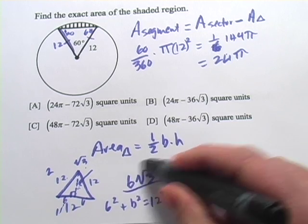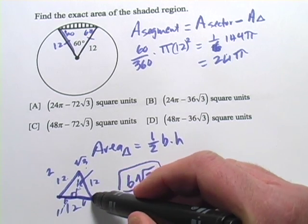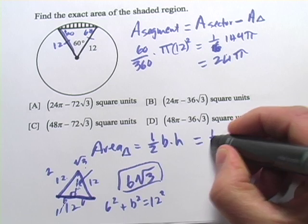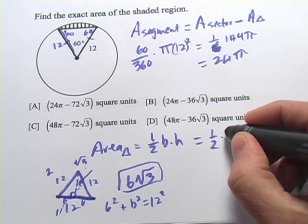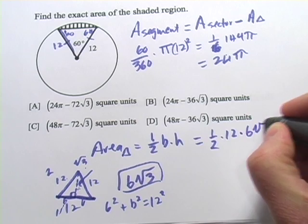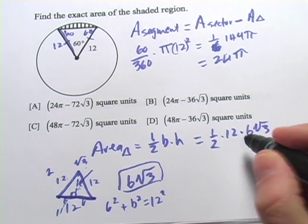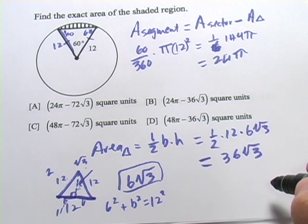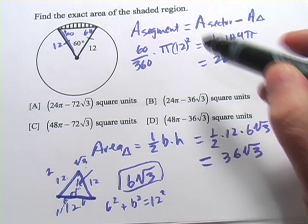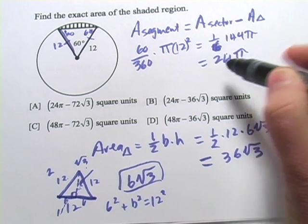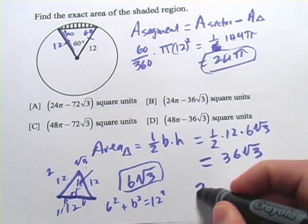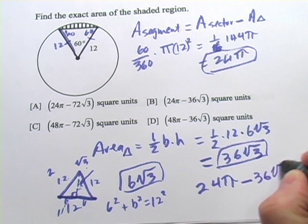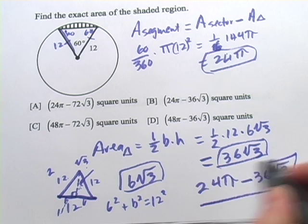This is our height. Our base of the equilateral triangle is 12, so we're ready to plug in. Area equals one-half times base 12 times height 6 root 3. One-half of 12 is 6, times 6 is 36, so the triangle area is 36 times the square root of 3. Our final answer is the area of the sector minus the area of the triangle: 24 pi minus 36 times the square root of 3.